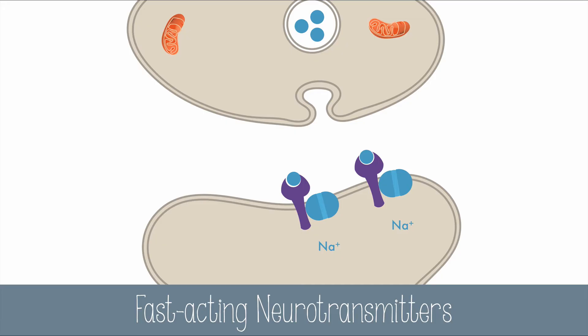This creates a very quick change in the membrane potential that won't last very long. Fast-acting neurotransmitters include the excitatory glutamate neurotransmitter and the inhibitory GABA neurotransmitter.